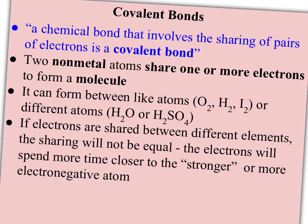With ionic bonds, one atom is going to lose electrons and another atom is going to gain them. It's an actual transfer of electrons, and it ends up with one atom picking up a positive charge as it loses electrons and the other atom picking up a negative charge as it gains electrons.